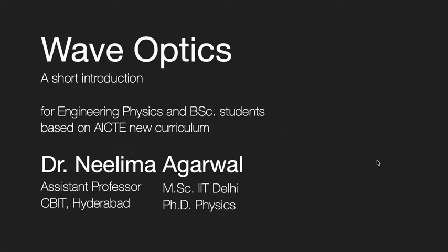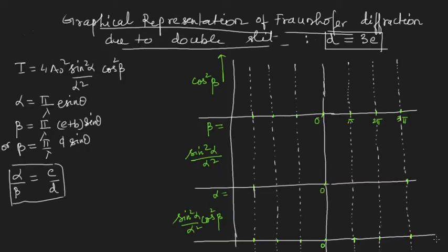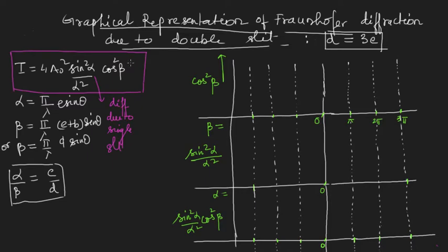In the last lecture we saw the intensity distribution due to Fraunhofer diffraction due to double slit. We saw that we can easily derive that relation from Fraunhofer diffraction due to n slits by taking the special case n=2. Again we saw that in double slit it is a combination of interference and diffraction. We calculated the intensity distribution: I = 4a² sin²α/α² · cos²β, where the first term shows diffraction due to single slit and the second term signifies interference due to two slits.